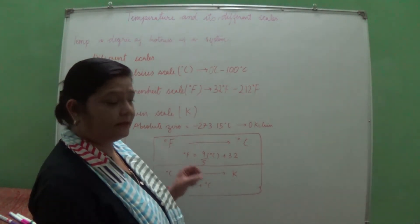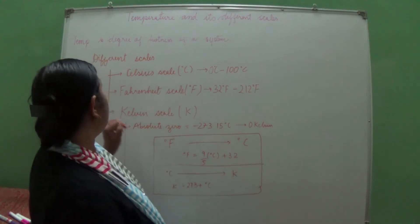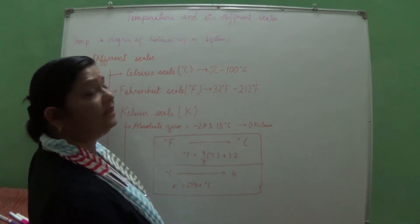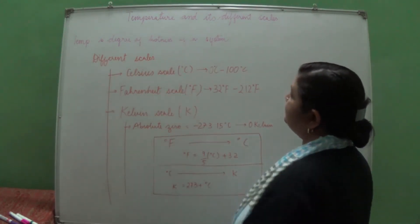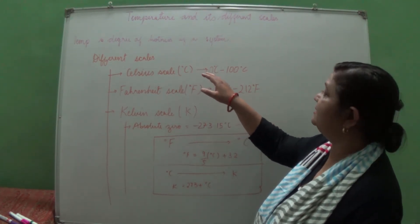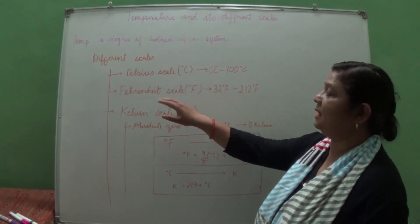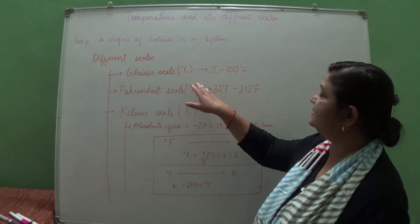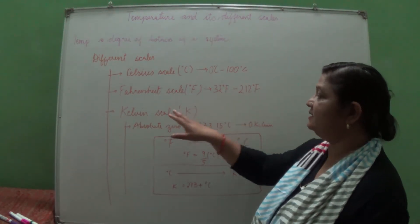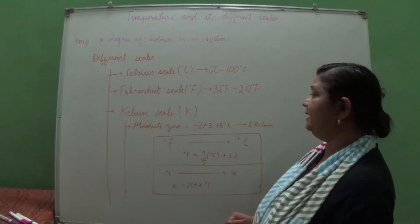Since change in temperature leads to change in state, let us understand temperature and its different scales. Temperature is a measure of the hotness of a system. There are three temperature scales: Celsius scale, Fahrenheit scale, and Kelvin scale. On the Celsius scale, the calibration goes from 0 degrees Celsius to 100 degrees Celsius. On the Fahrenheit scale it is represented in degrees Fahrenheit, with calibration from 32 to 212 degrees Fahrenheit. The Kelvin scale is used in labs and its SI unit is Kelvin.